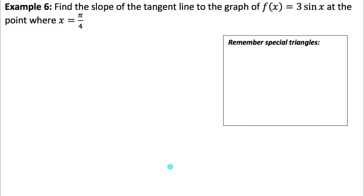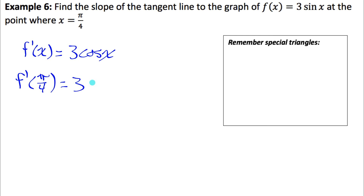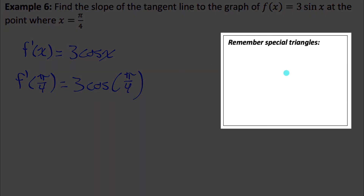Two more examples. Find the slope of the tangent line to the graph of f at x equals 3 sine x, at the point where x equals pi over 4. We want the slope of the tangent line, which means we want the value of the derivative at that x value. The derivative of 3 sine x is 3 cos x, and now I want the value of that derivative at pi over 4, which means I need 3 times cos of pi over 4.